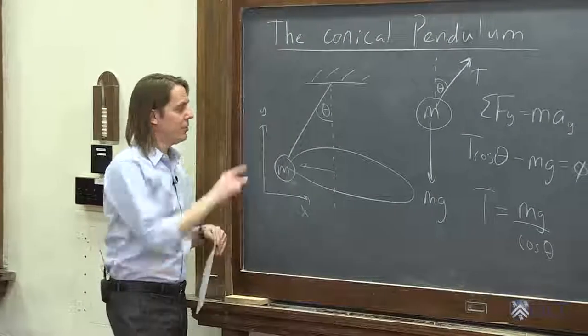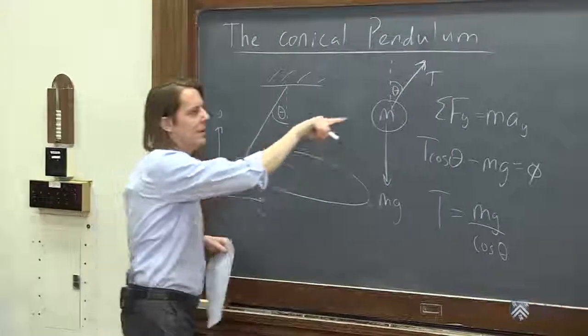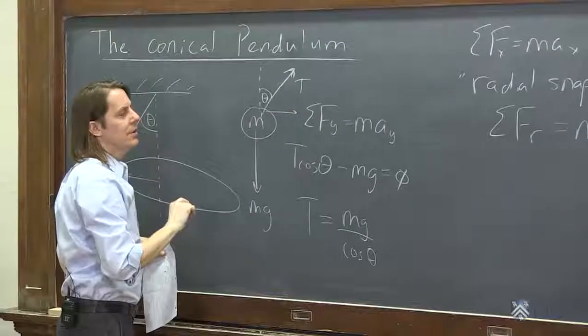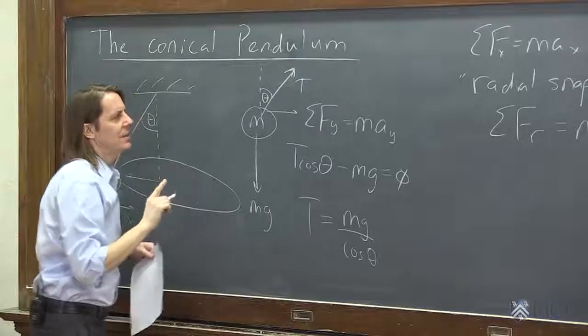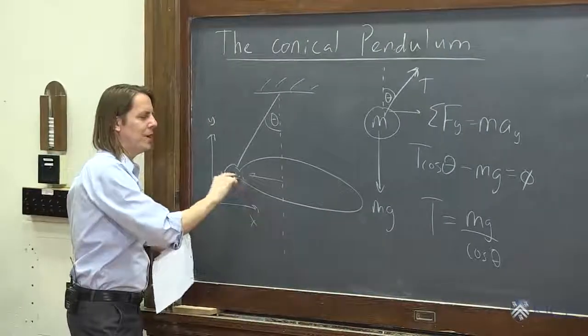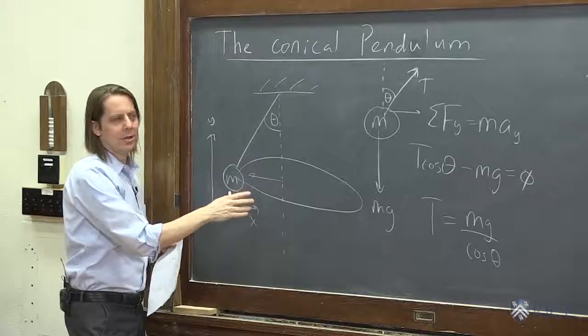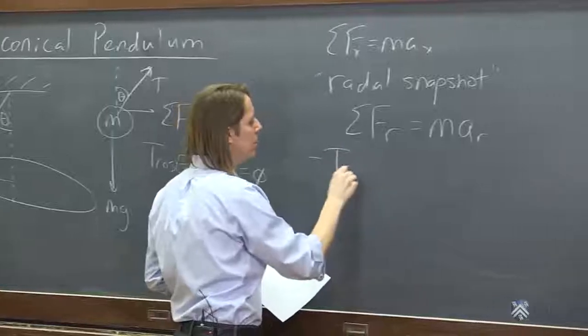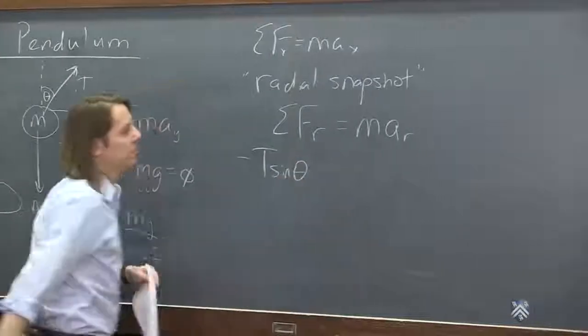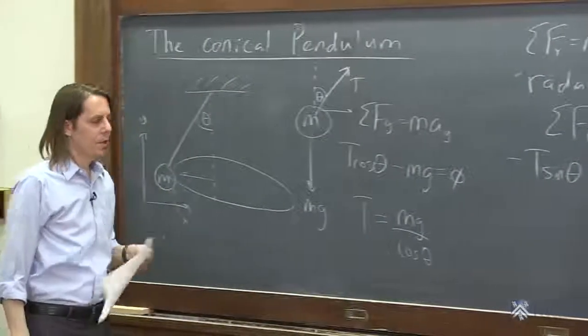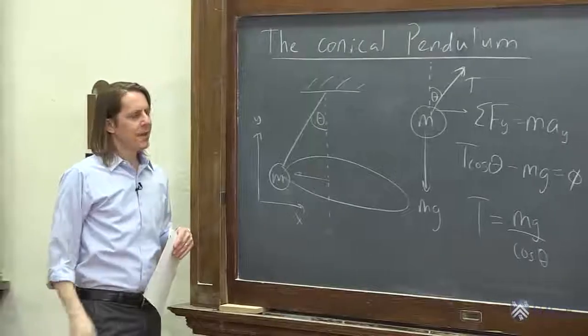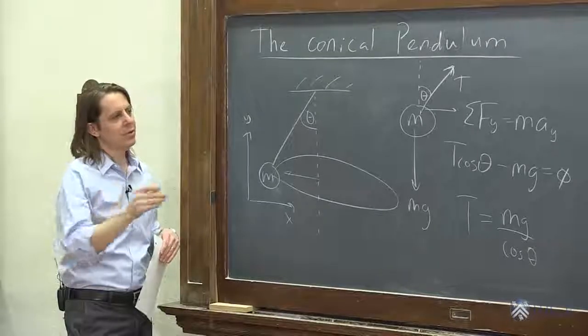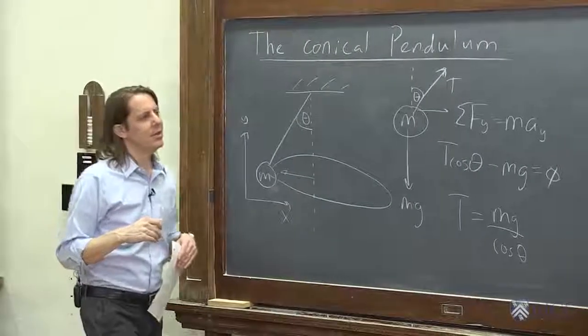So the force in the radial direction is the sine component of the tension, tx. So it is T sine theta, and it's pointing in positive x, but it's pointing in a negative radial direction. So since we wrote it as radial, I'm going to write negative T sine theta. What else do we have in the x direction in terms of forces? Nothing. That's the only one pulling it in, making it go in a circle.